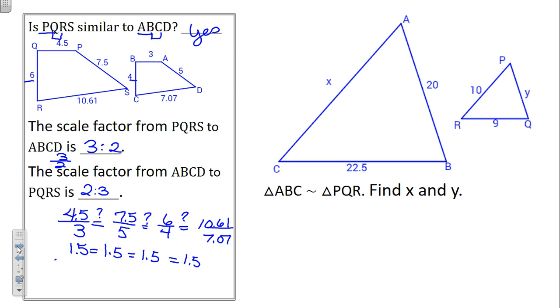So now they tell us, guess what? These two triangles are similar. Can you tell me what X and Y are going to be? The two triangles are similar. Find X, find Y. So ABC is similar to PQR. That means that AB corresponds to or is proportional to PQ as BC is to QR or RQ as AC is to PR. So let's write our proportions.